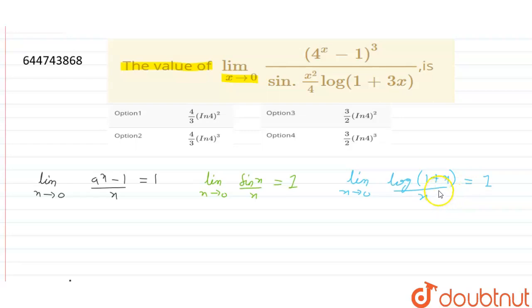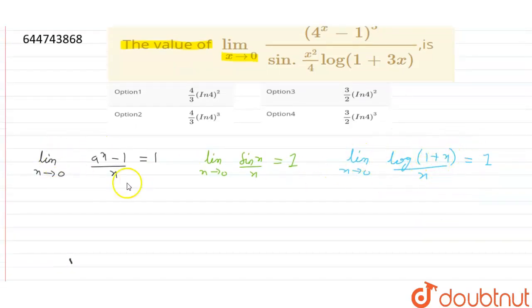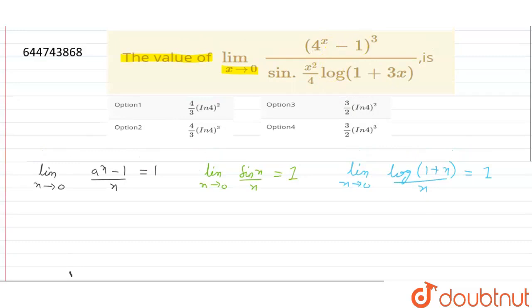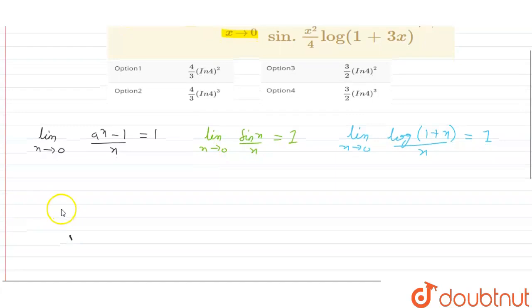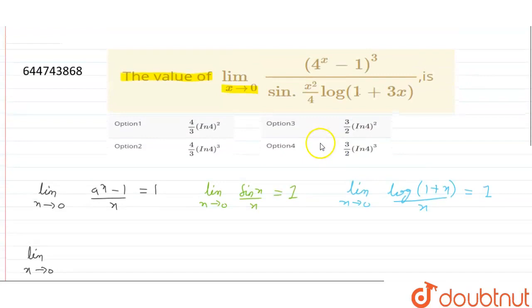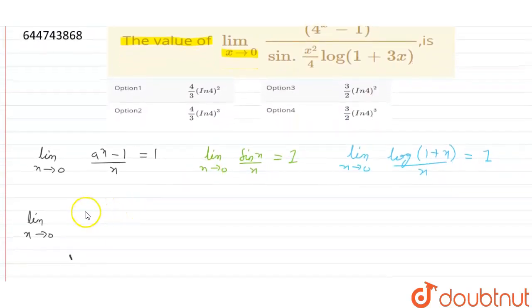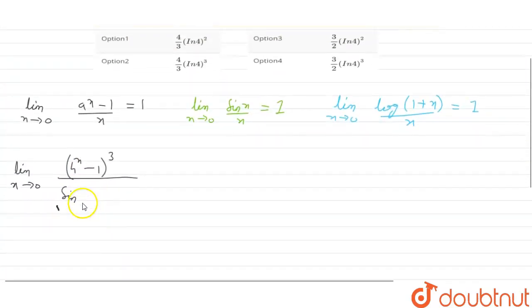For solving this type of question, we must know these three properties. We will use these three properties here to get the answer. Let us start by writing the given equation which was limit x tends to 0, 4 to the power x minus 1 whole cube divided by sine of x square by 4 into log of 1 plus 3x.